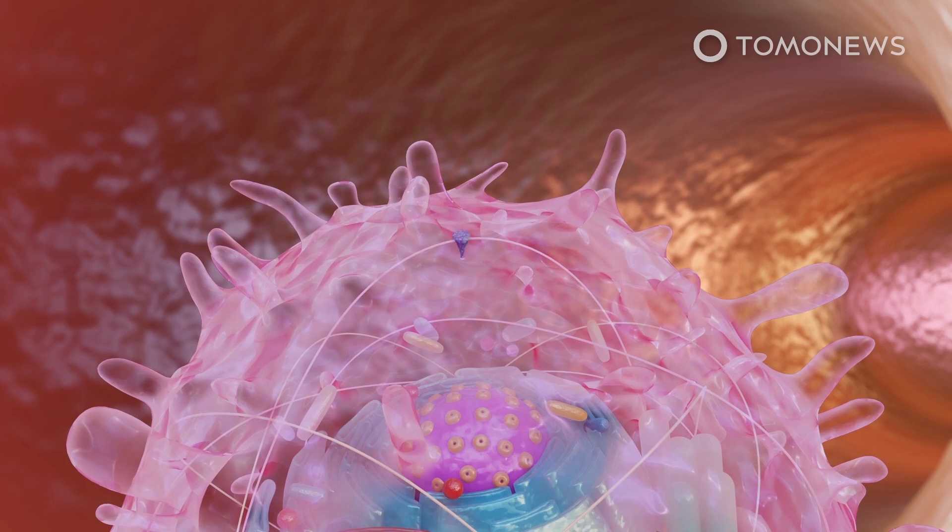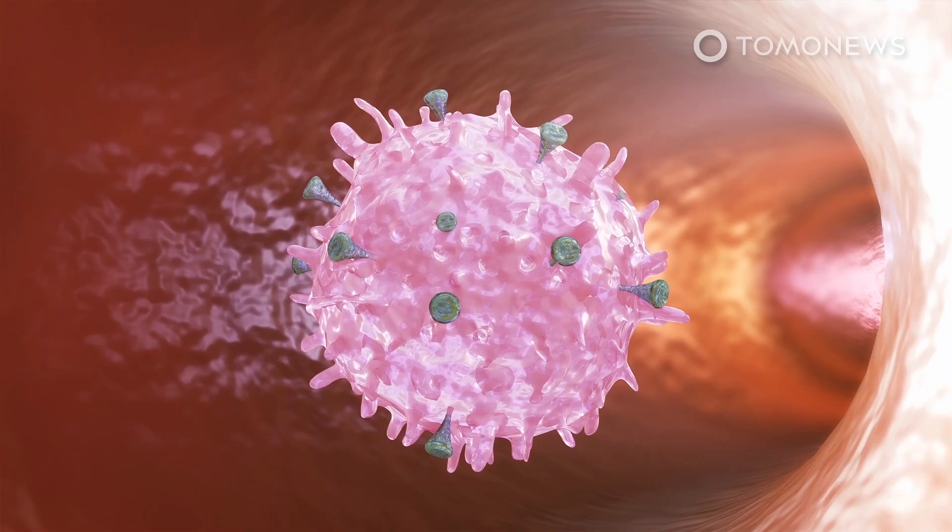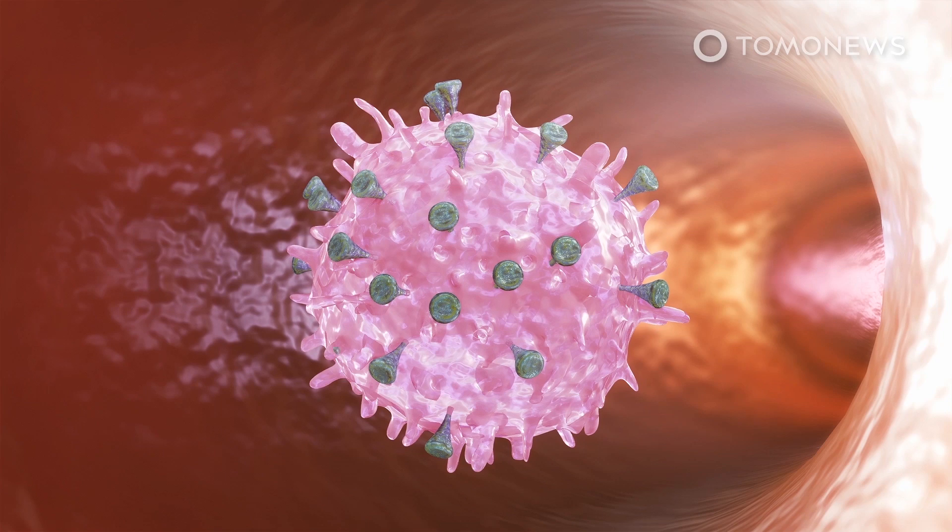By itself, the spike protein is harmless. The spike protein is then displayed on the surface of the cell. This simulates a coronavirus infection, thus triggering the body to mount an immune system response.